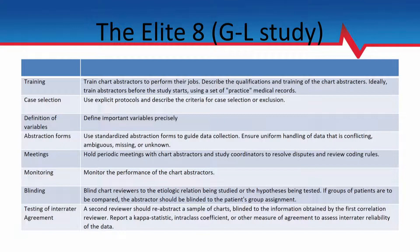You want the kappa coefficient as close to perfect as possible. High variability often means your definitions are unclear, or it's just not clear in the chart — this commonly happens in radiology-type studies where abstractors are interpreting paragraphs written by radiologists. These eight components are the big eight from the Gilbert and Lowenstein study.